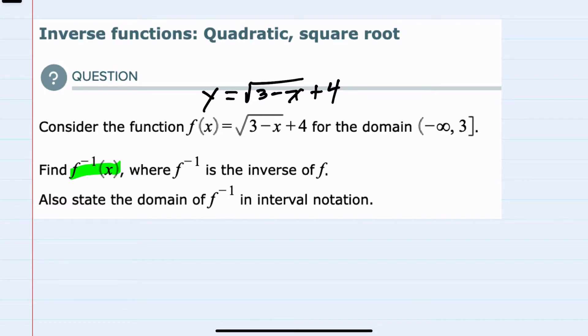So I'm going to rewrite this as x on the left-hand side and the square root of 3 minus y underneath the radical plus 4. So again, I have switched the x's and y's in the original function, and now to find the inverse I need only solve for y.